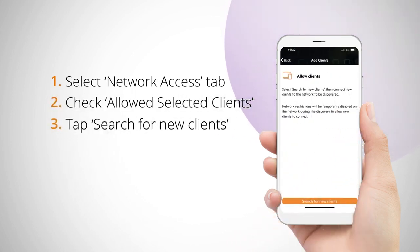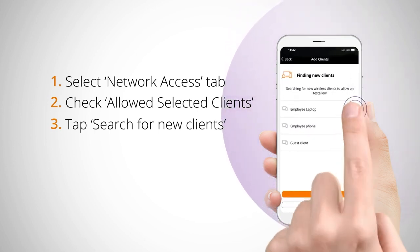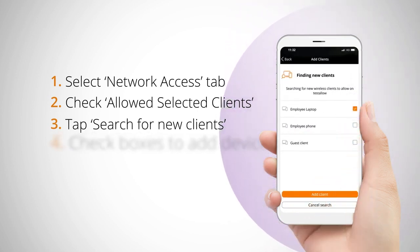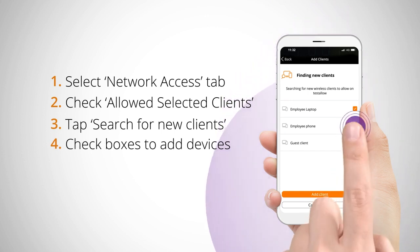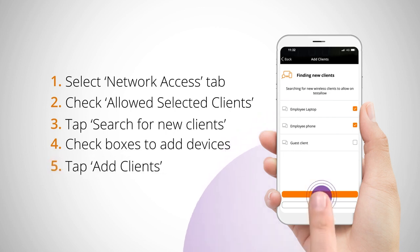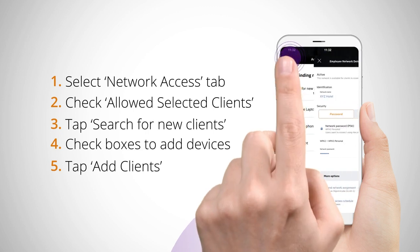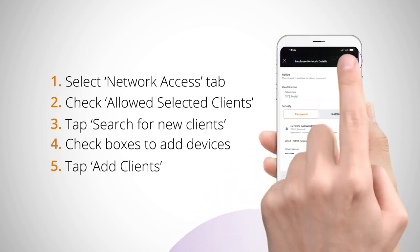This is where you'll add the devices with permission. From here select add clients and check the boxes of IDs or device names you want to grant permission on your wireless network. Select add clients, then return to the network details page and select done to save your changes.